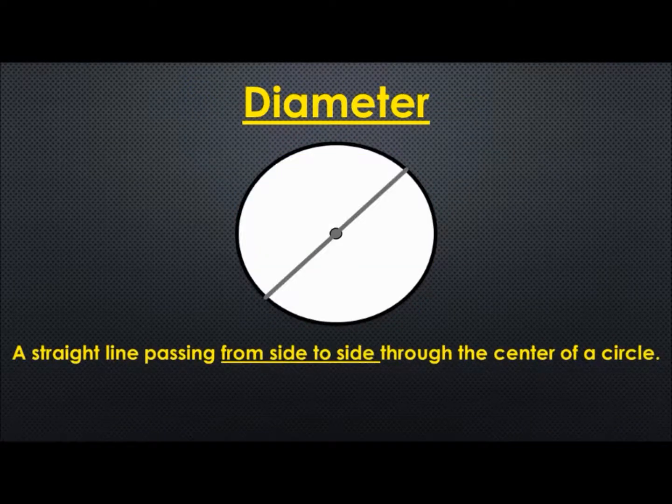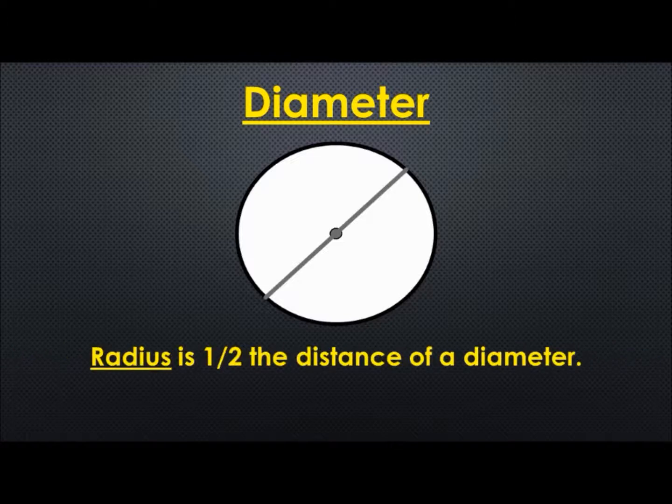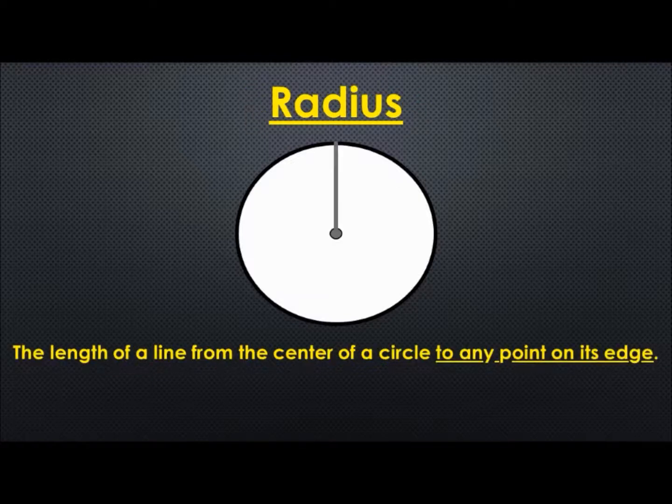The diameter is a straight line passing from side to side through the center of a circle. The radius is half of the distance of a diameter. A better definition of radius is the length of a line from the center of a circle to any point on its edge.